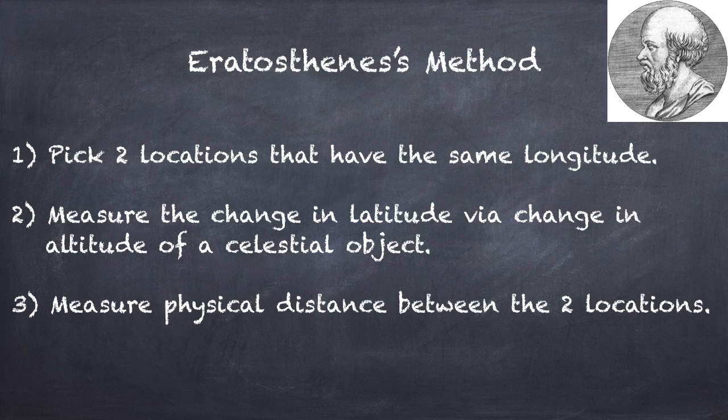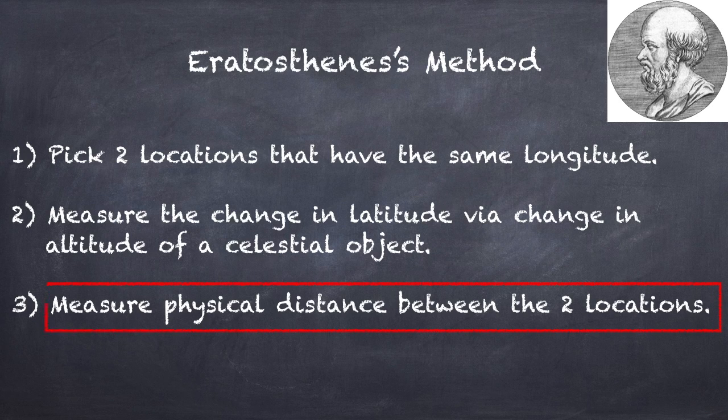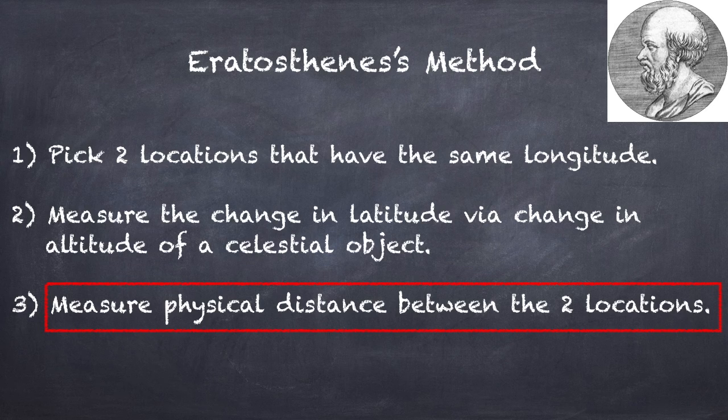Now this method is pretty simple, but it has one flaw, which is this third step here. Because how accurately could you really measure the distance between these two locations, especially considering that you don't want the distance on ground, you want the distance as the crow flies.